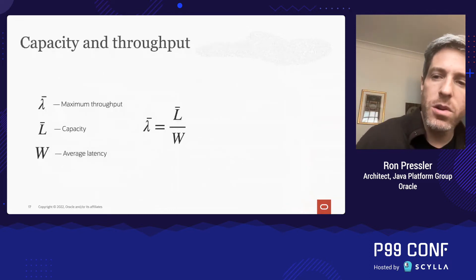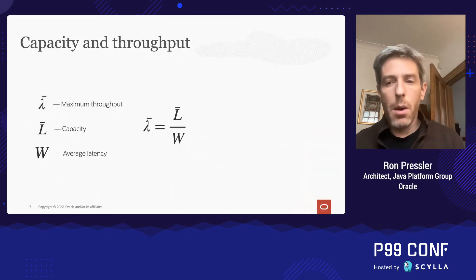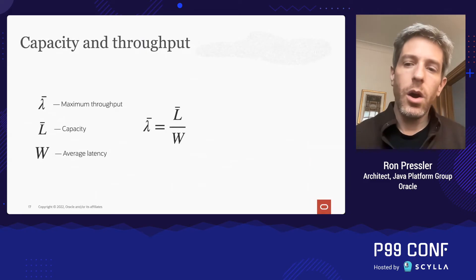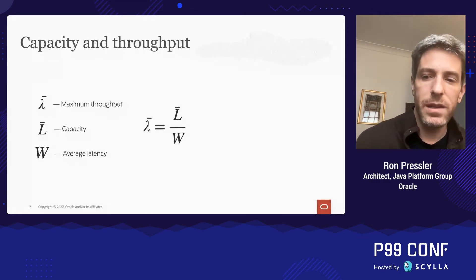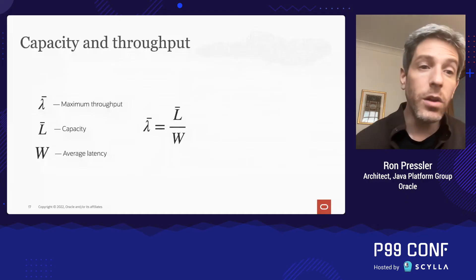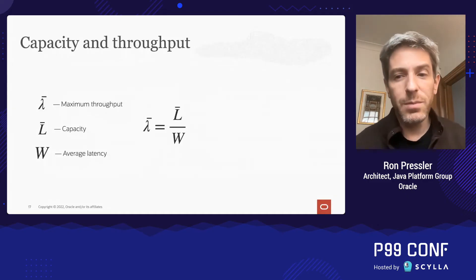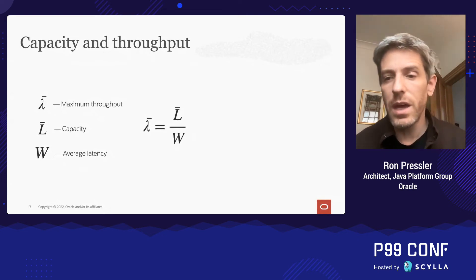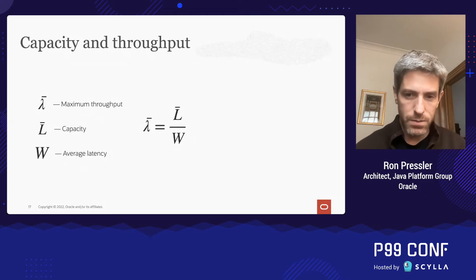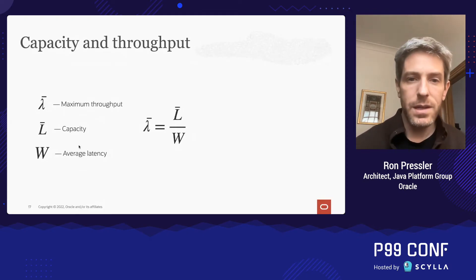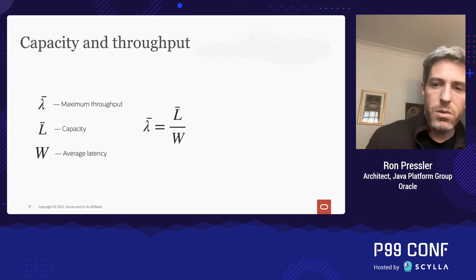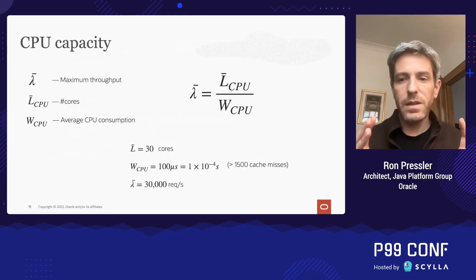Now let's make things more concrete and talk specifically about software servers. An incoming request will spend some average duration W inside our server. We try to reduce that duration as much as possible, optimizing our latency, but ultimately W depends on the inherent properties of our particular system — the network topology, the database latency, the algorithmic work we need to do — and W becomes a constant of our system. During that time the request consumes resources: memory, CPU, network bandwidth, DB connections. That resource consumption determines how many requests can live concurrently inside the system — our capacity L-bar — and that capacity determines the maximum throughput lambda-bar we can achieve. Let's start by considering just the CPU as our system.